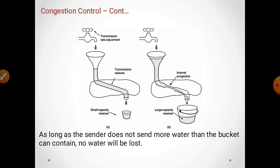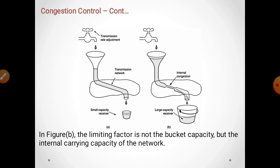In the ideal case, as long as the sender does not send more water than the bucket can contain, no water will be lost. The network channel sender will send a limited amount of packets to the receiving channel and the receiver will receive them, so there will be no packet loss. But in Figure B, the limiting factor is not the bucket capacity but the internal carrying capacity of the network pipeline.